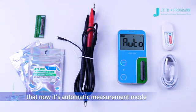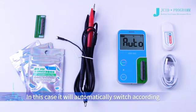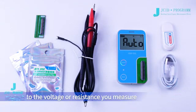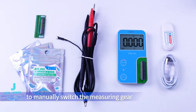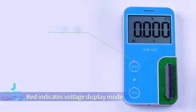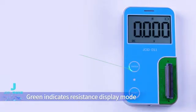Indicates that now it's automatic measurement mode. In this case it will automatically switch according to the voltage or resistance you measure. Short press the switch key to manually switch the measuring gear. Red indicates voltage display mode, green indicates resistance display mode, blue indicates diode display mode.